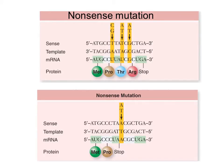Another type of mutation is a nonsense mutation. In this case, the original sequence is replaced so that a codon that used to code for an amino acid now becomes a stop codon. This causes termination of translation earlier than it should, producing proteins that are shorter than normal. How bad this is depends on how much of the protein was left and how important that missing piece is — if the stop codon occurs early, it can completely disable the protein.